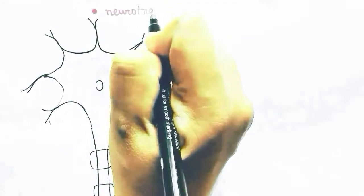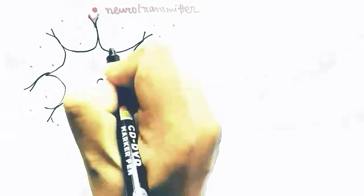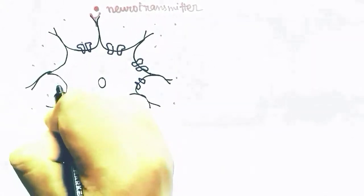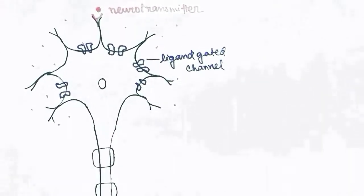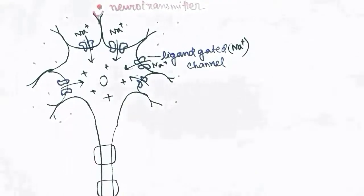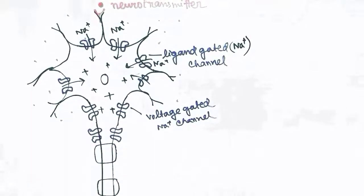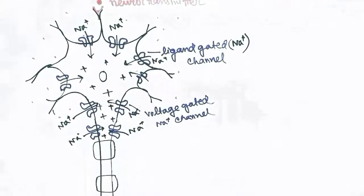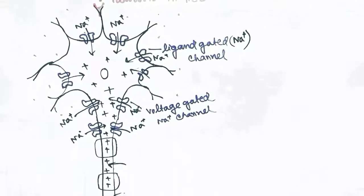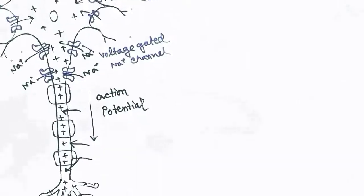To recap: neurotransmitters bind to the dendrites where ligand-gated channels are present. These ligand-gated channels open, allowing inflow of positively charged sodium ions, which are concentrated outside, into the neuron — making the inside positive. This positive voltage opens the voltage-gated sodium channels in the axon, helping sodium flow inside the axon, and the positive charge flows toward the end of the neuron.